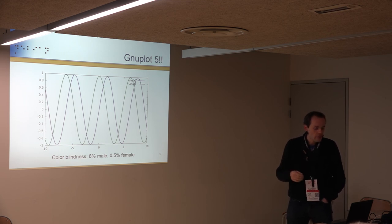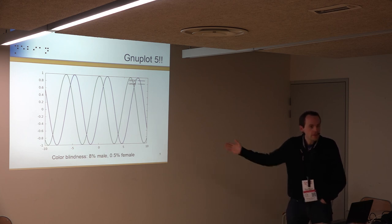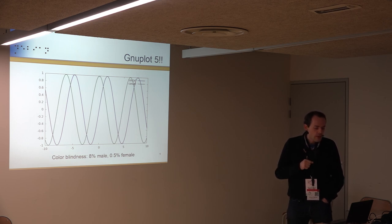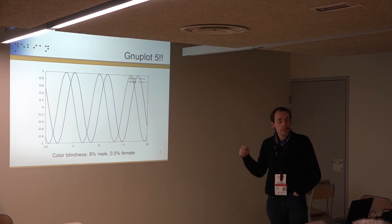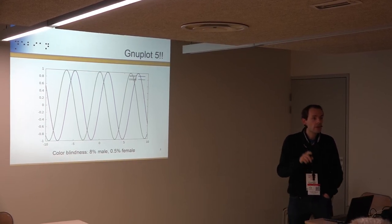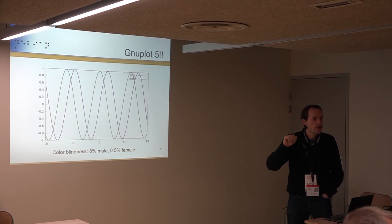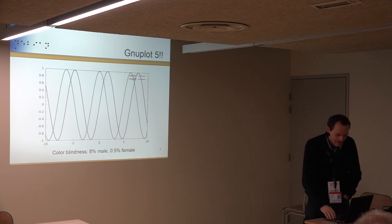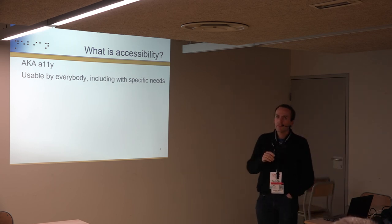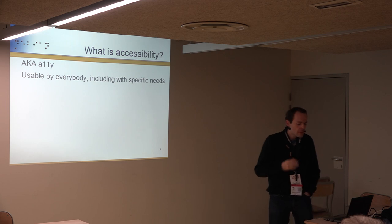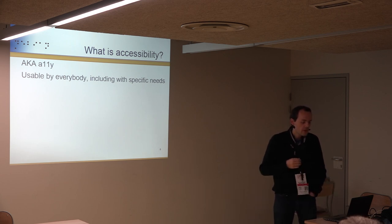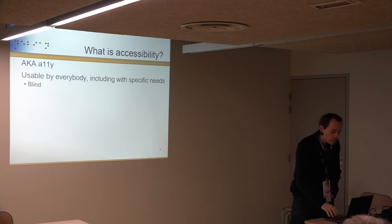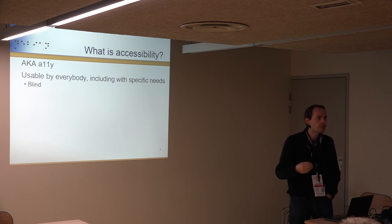There was research about which colors are distinguishable by most people. Some people cannot really distinguish anything at all, but at least the new palette should work for many more people. About 8% of male people are colorblind — maybe some colorblind people are here? So what is accessibility? It means making software usable by everybody, including people with specific needs.